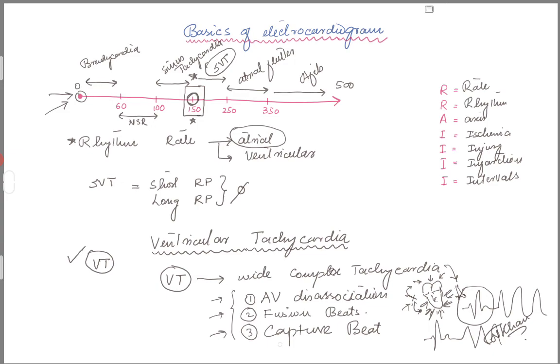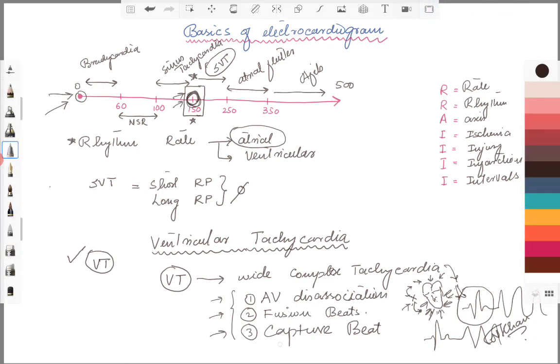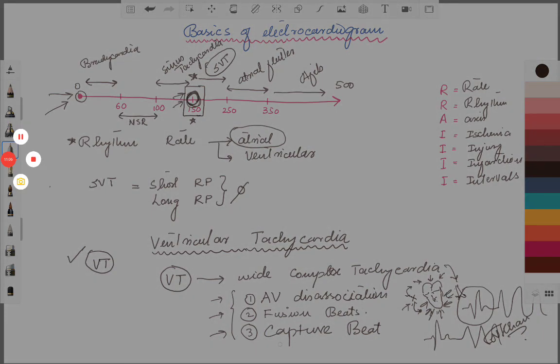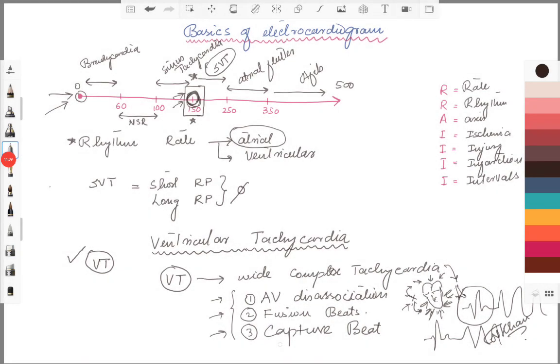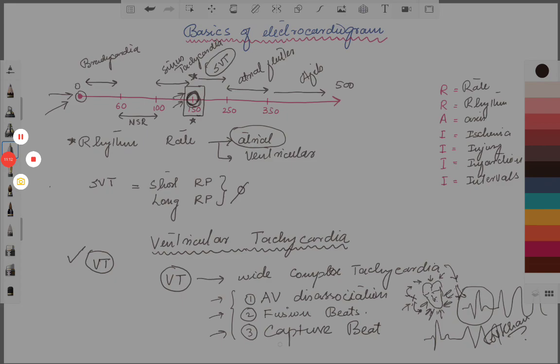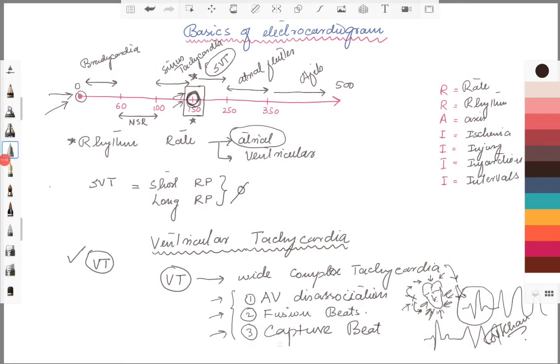From this lecture, if you want to take away two points: one will be your magic number 150. Once the EKG atrial rate touches 150 and above, unless there's another explanation like the patient has fever, is exercising a lot, or is anemic, for the most part it's an SVT zone. For wide complex tachycardia, it is VT unless proven otherwise, and the things you have to look at are AV dissociation, fusion beats, and capture beat. I hope this will be helpful. We'll come up with another short lecture after this one.